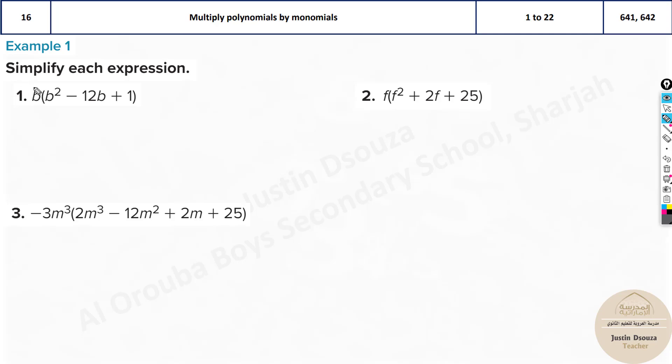Over here, B is a monomial to multiply with this polynomial. What you do is distribute this evenly throughout. So it'll be B squared multiplied by B will be B cubed. Because it's in writing, it's better to have more elaboration. B times B squared is B cubed minus 12B times B is B squared plus B. That's the answer.